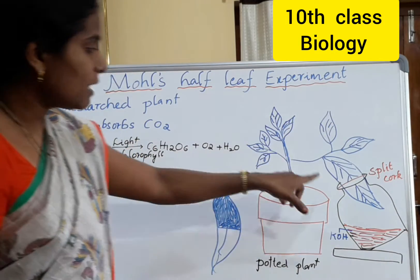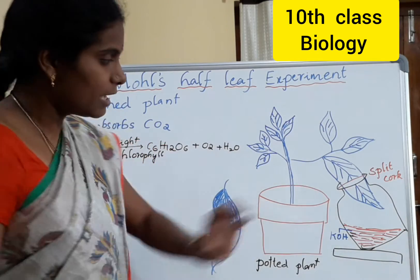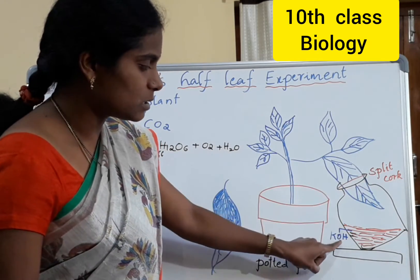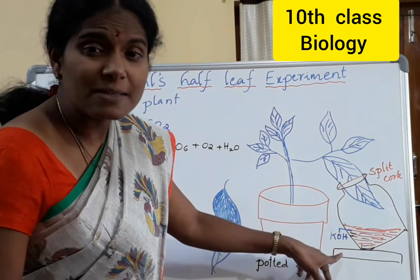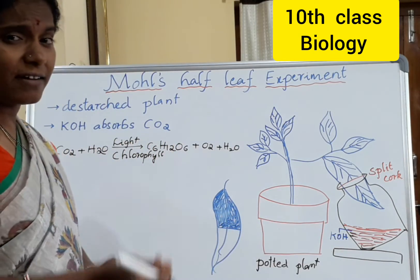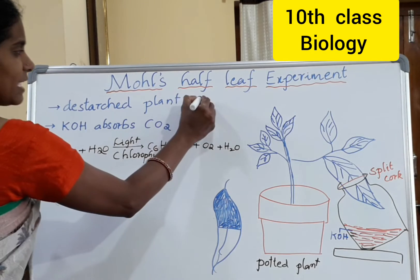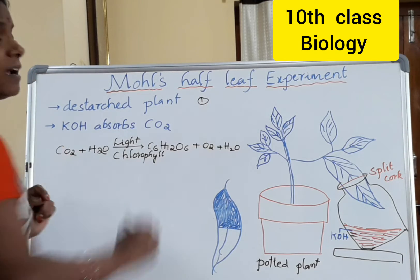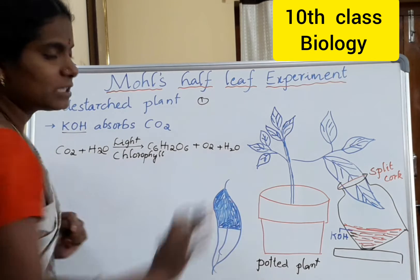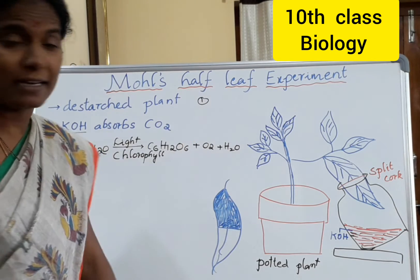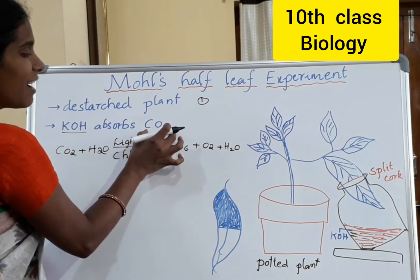That is why the name is half leaf — only half of the leaf we are inserting into the bottle that consists of KOH. There is a reasoning question here: why should we de-starch the plant? That is the first reasoning question. And the second one is, what is the role of KOH in the bottle in this experiment? The role of KOH is to absorb carbon dioxide.